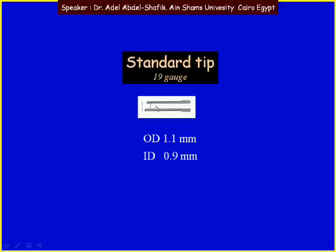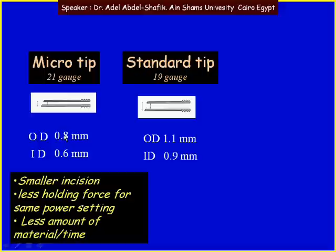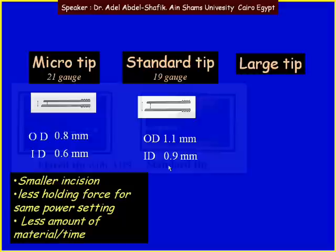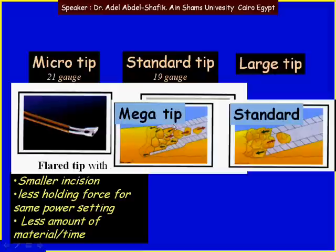The third strategy is to use a different phaco tip. The standard tip has an outer diameter of 1.1 mm and an inner cavity diameter of 0.9 mm. We can use a micro tip with an outer diameter of 0.9 mm and inner diameter of 0.6 mm. The micro tip can be applied through a small incision, but it has less holding force for the same power settings, and the amount of lens material removed over time is less. We can go for a larger tip size like the flare tip, which has a wide large opening at the tip of the needle.